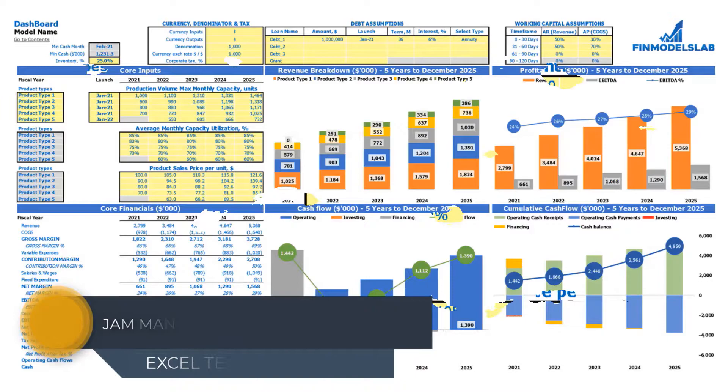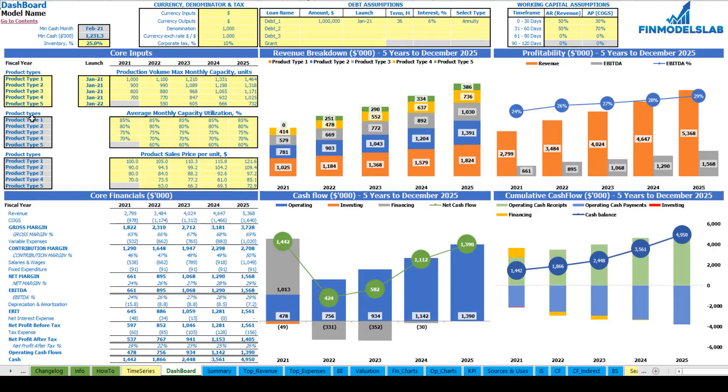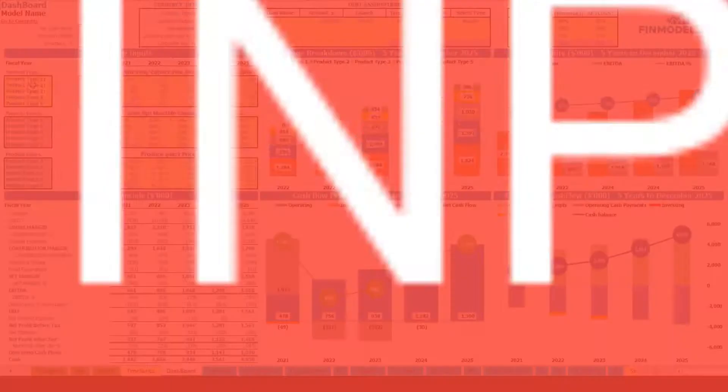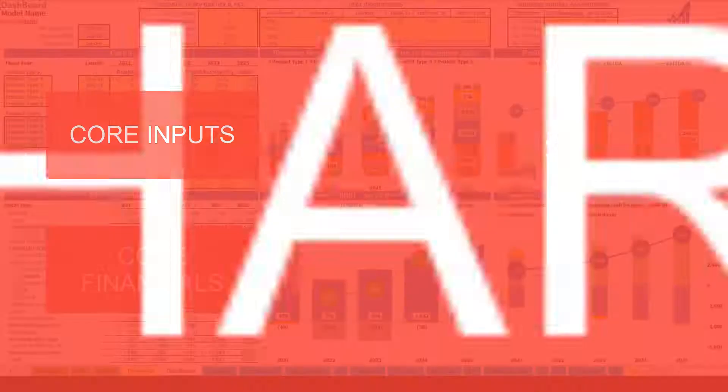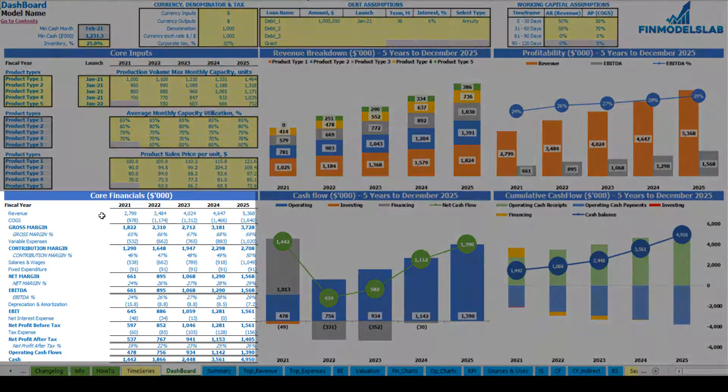Hello, in this video I'm going to walk you through the financial model Excel template. I will show you the main inputs, the core outputs, reports and charts. On the dashboard you can set up your core inputs or drivers for the model, review the core charts such as revenue breakdown, profitability, cash flow and cumulative cash flow, and also review the core financials which is a summary of your financials by years.